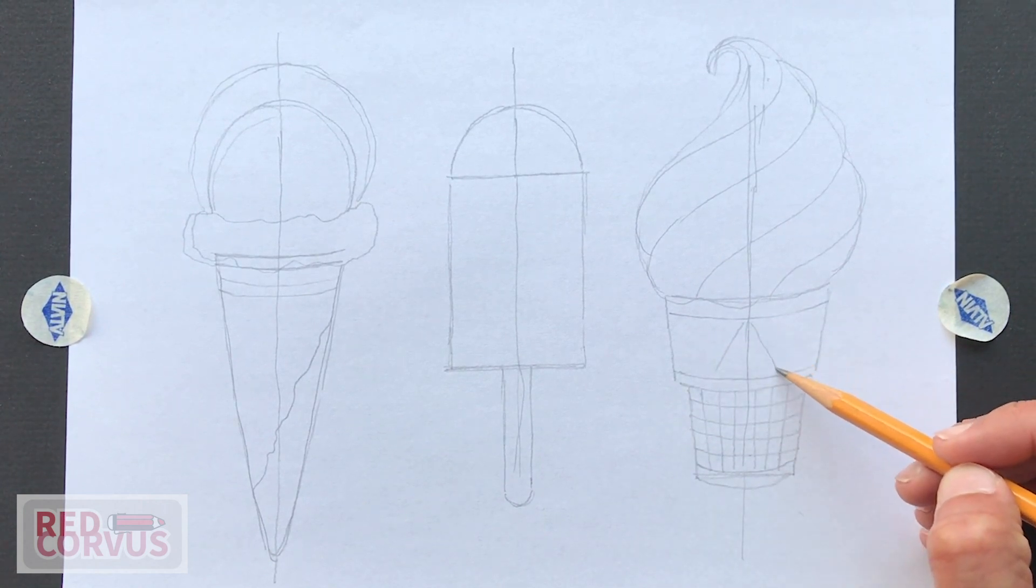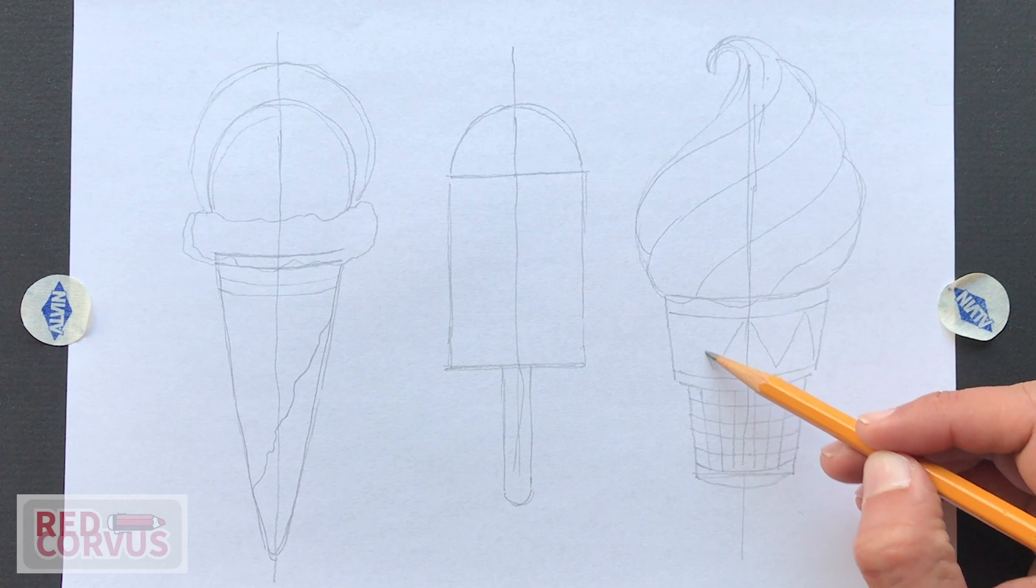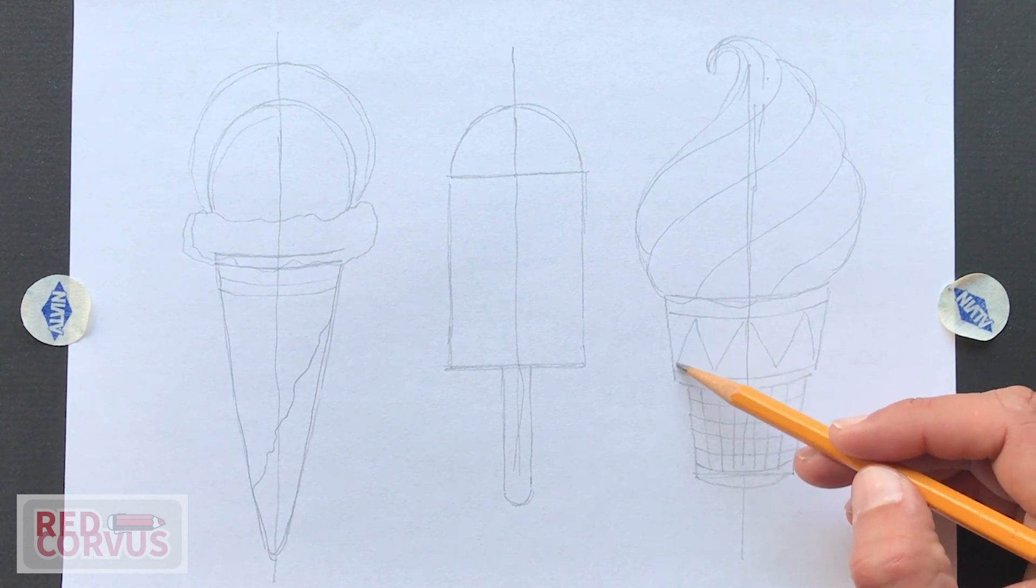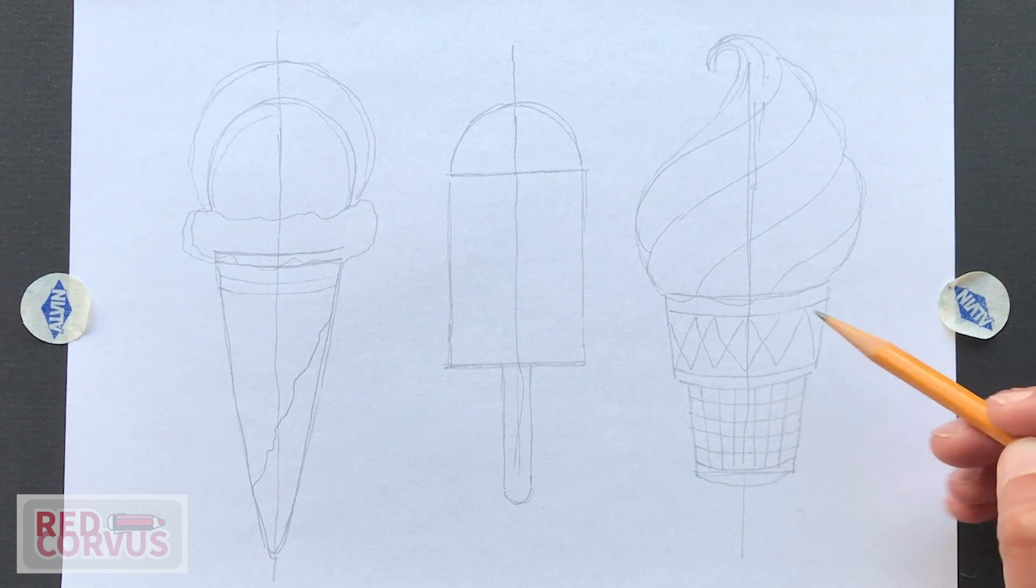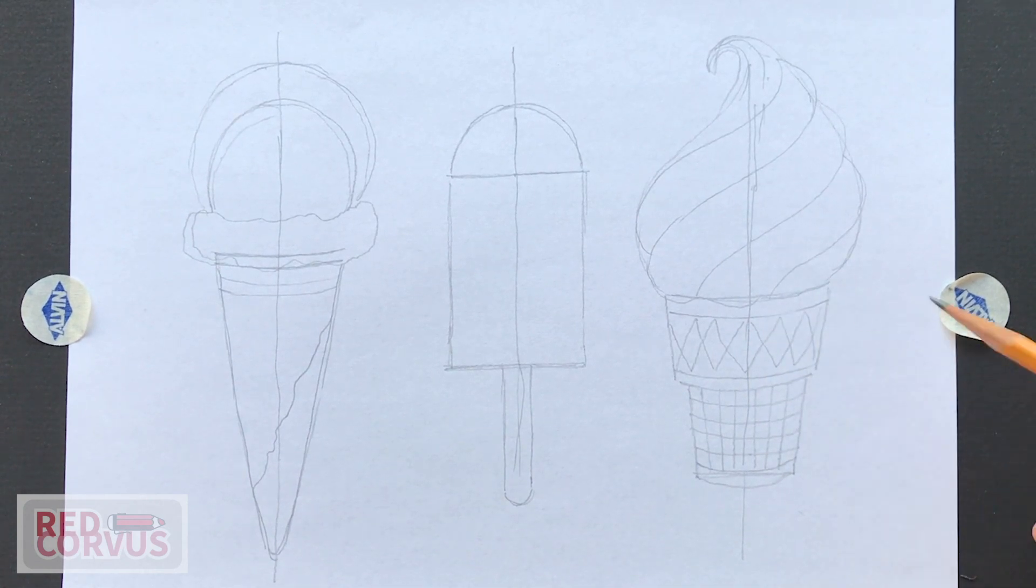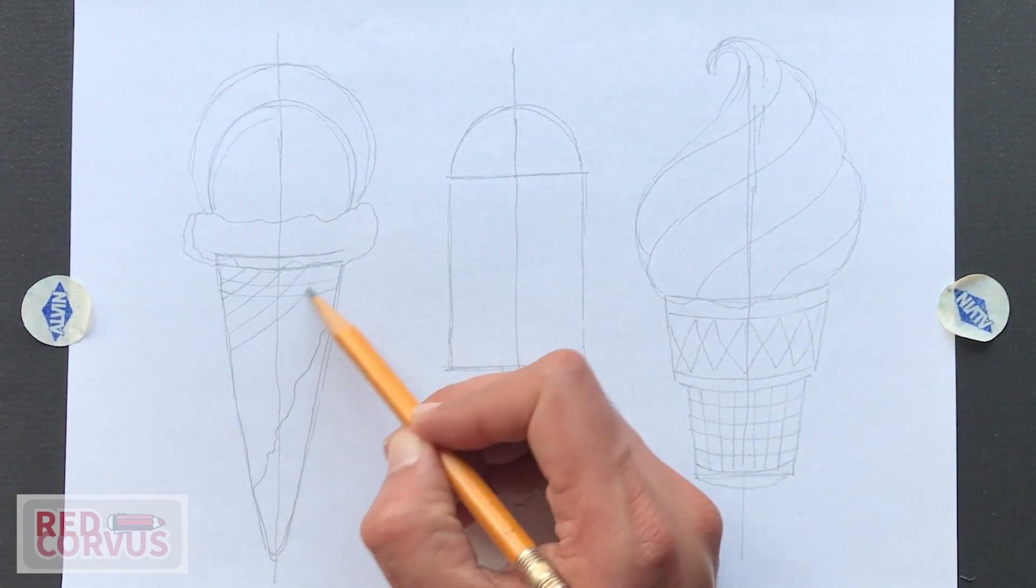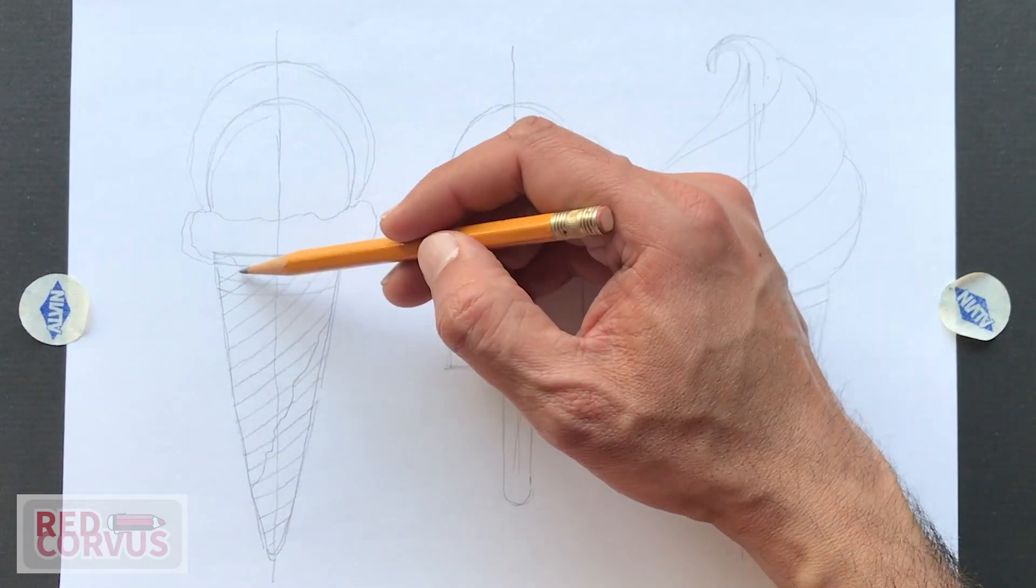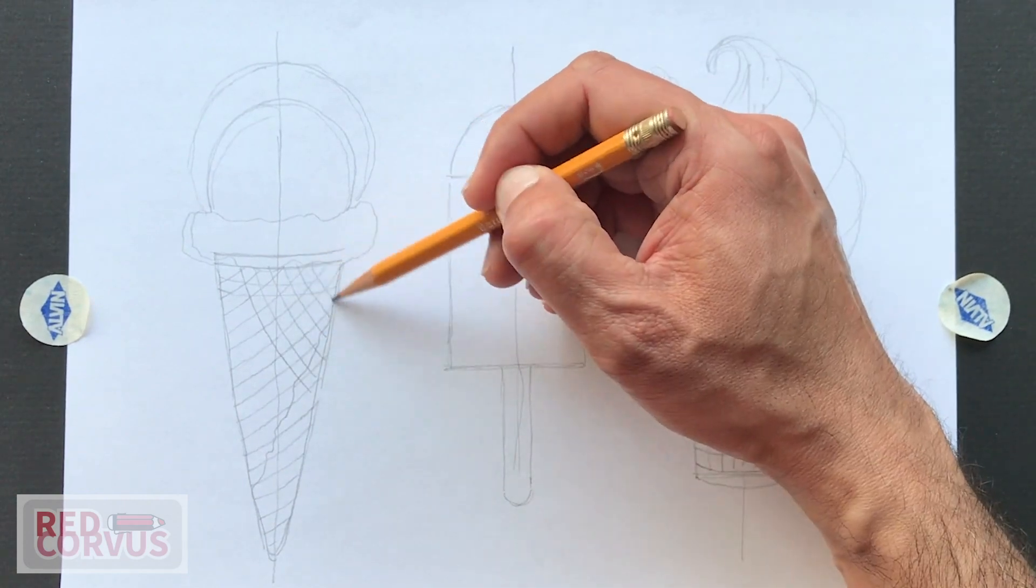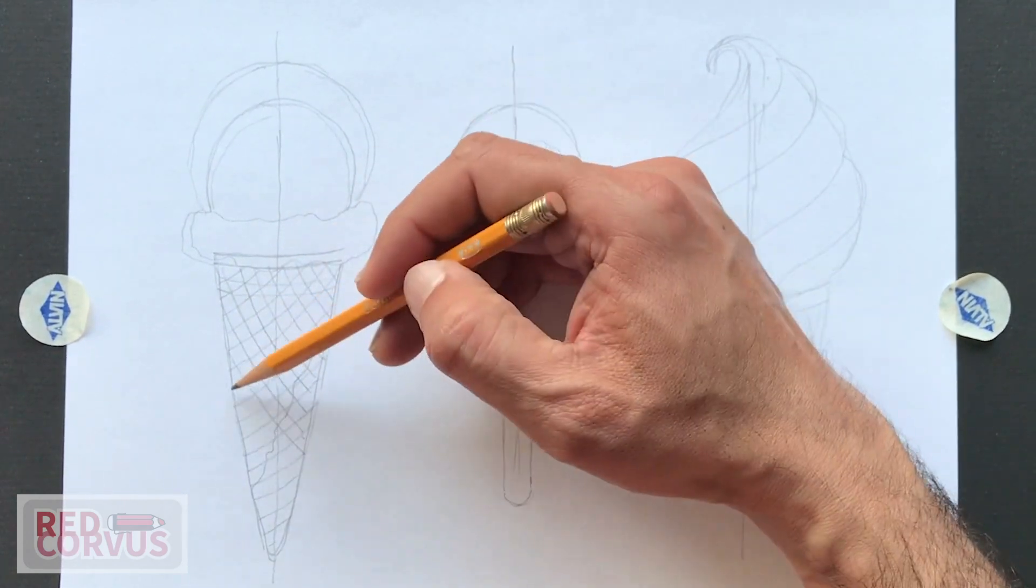On the upper part, I'm going to do a crisscross pattern. Now I'm going to add the crisscross pattern to the waffle cone. You can draw lines at any angle. Just make sure that they're curved. And then do another layer at 90 degrees on top.